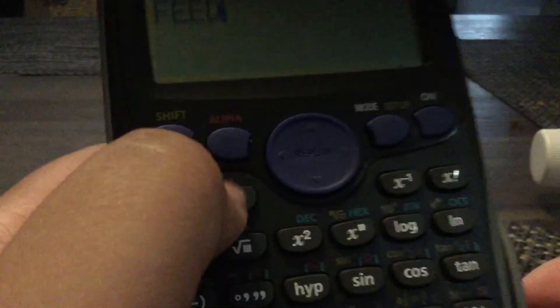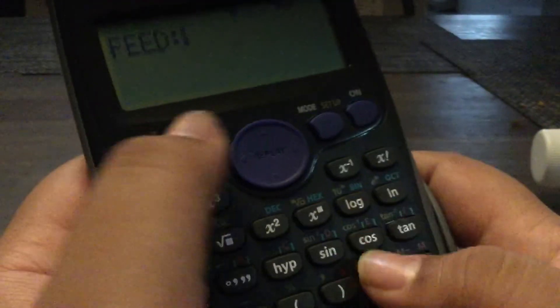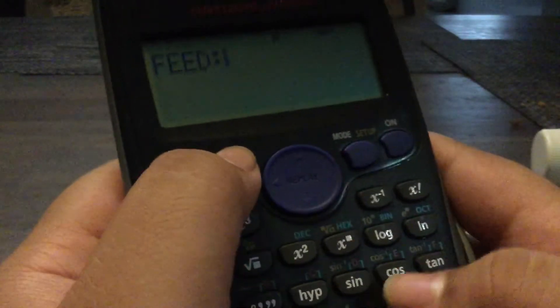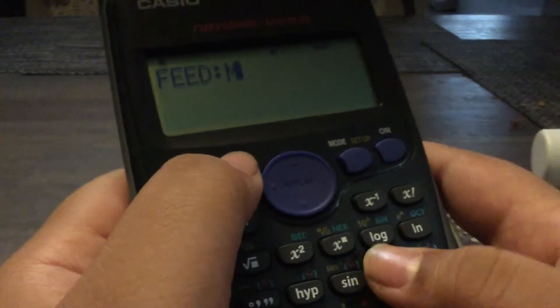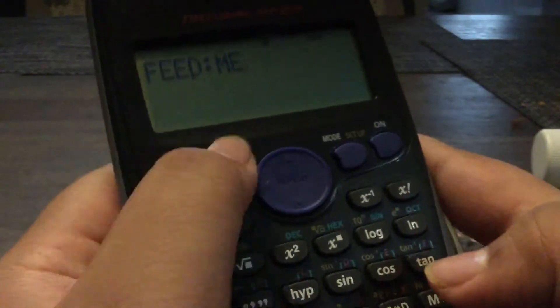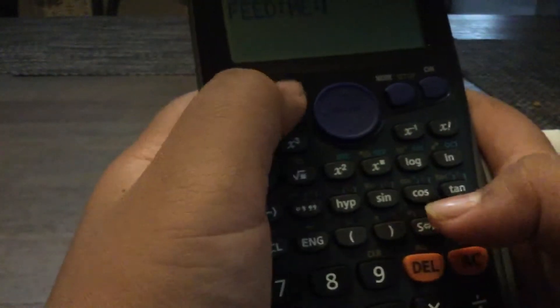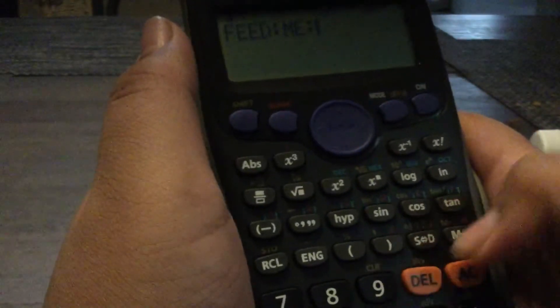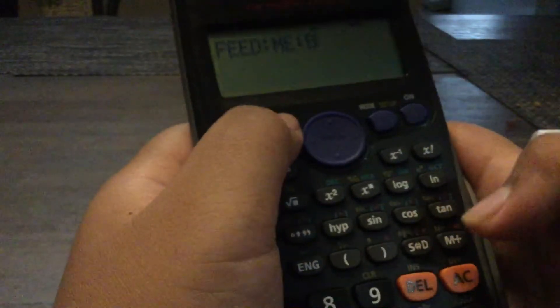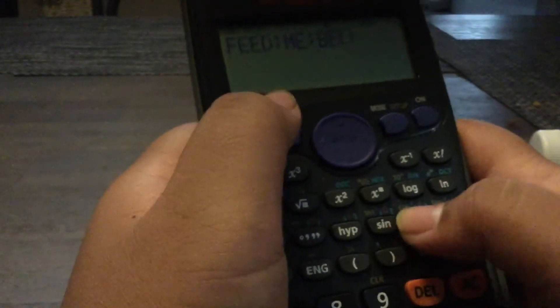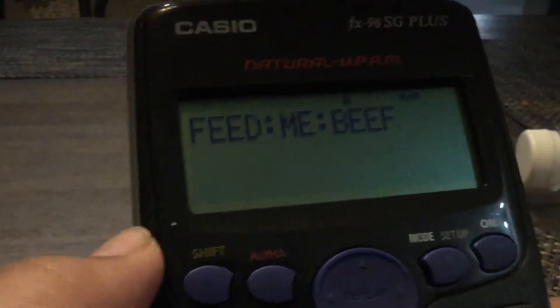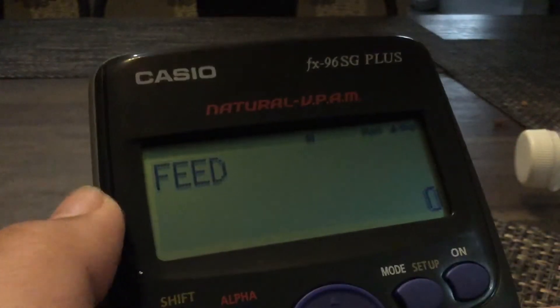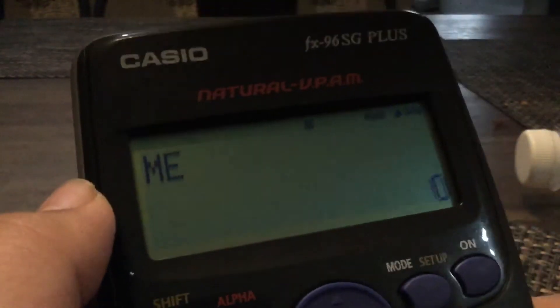You can put alpha B, alpha E, alpha E, alpha F. So this one, so look, see this. So let's just press equals. Feed me beef. Feed me beef. This is kind of a thing that you can do.